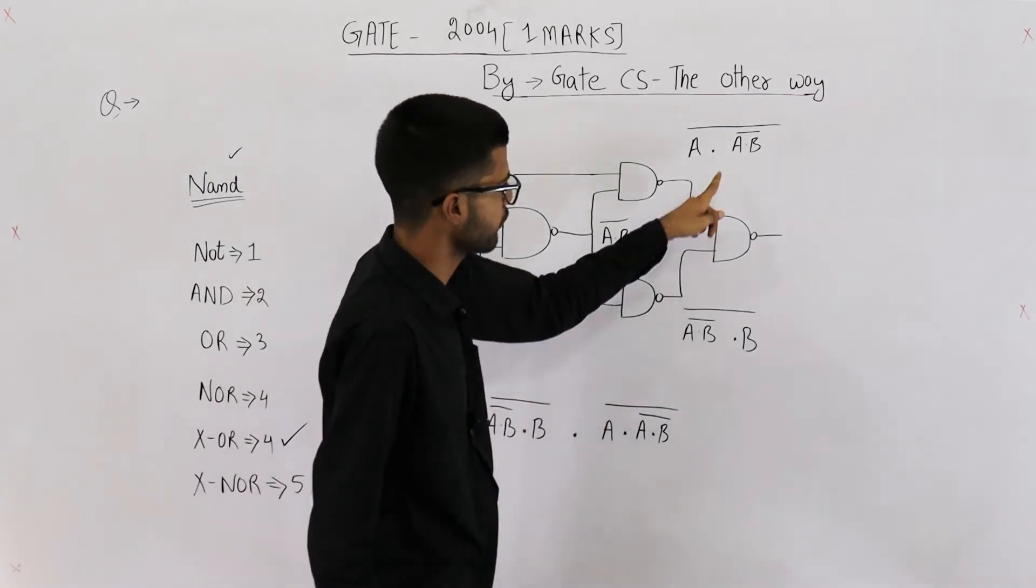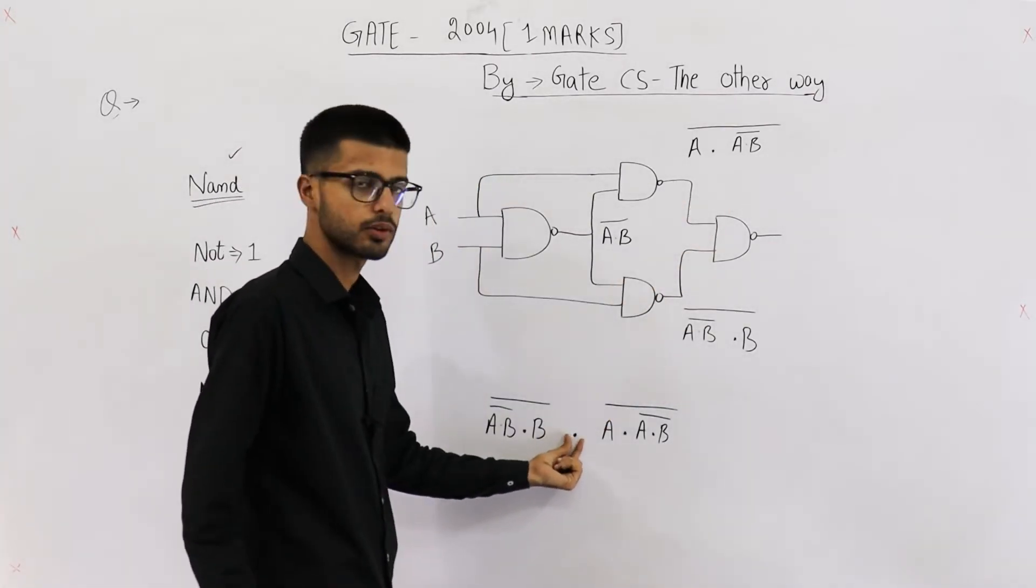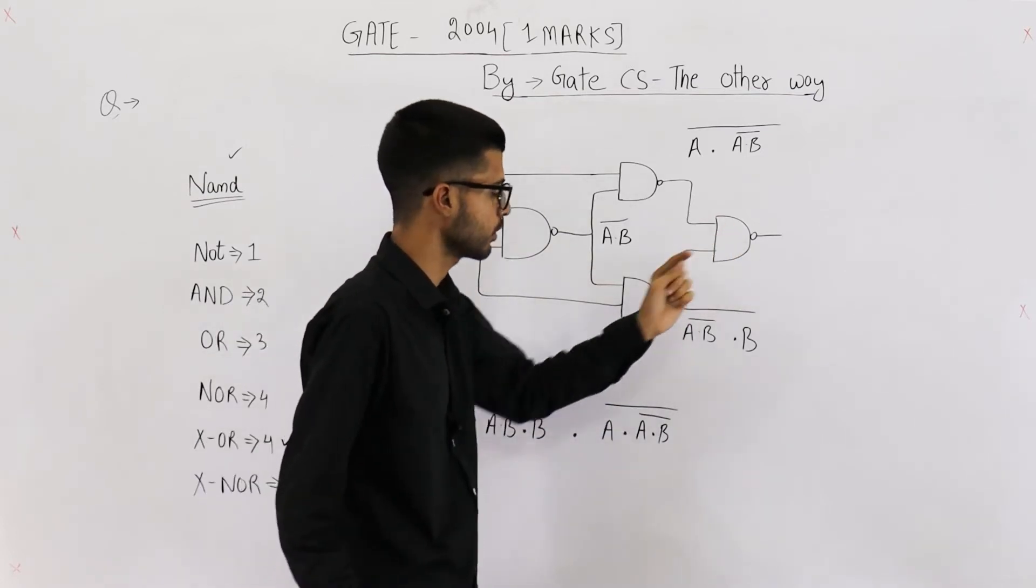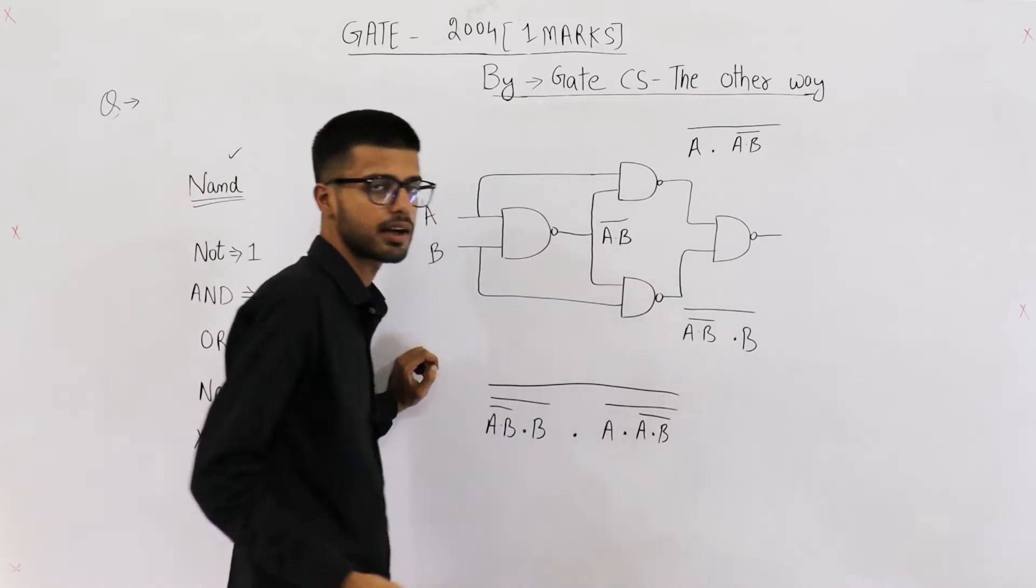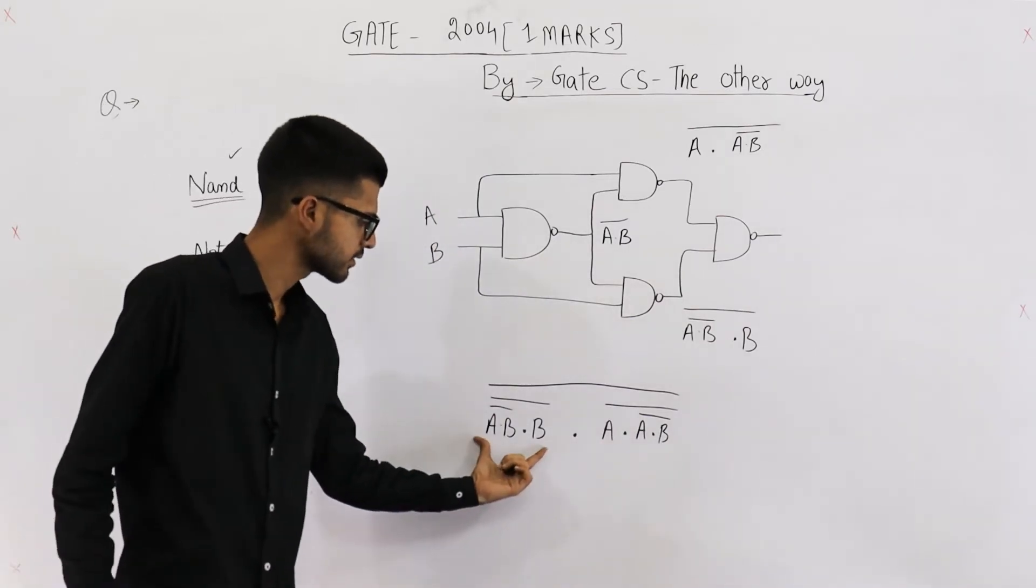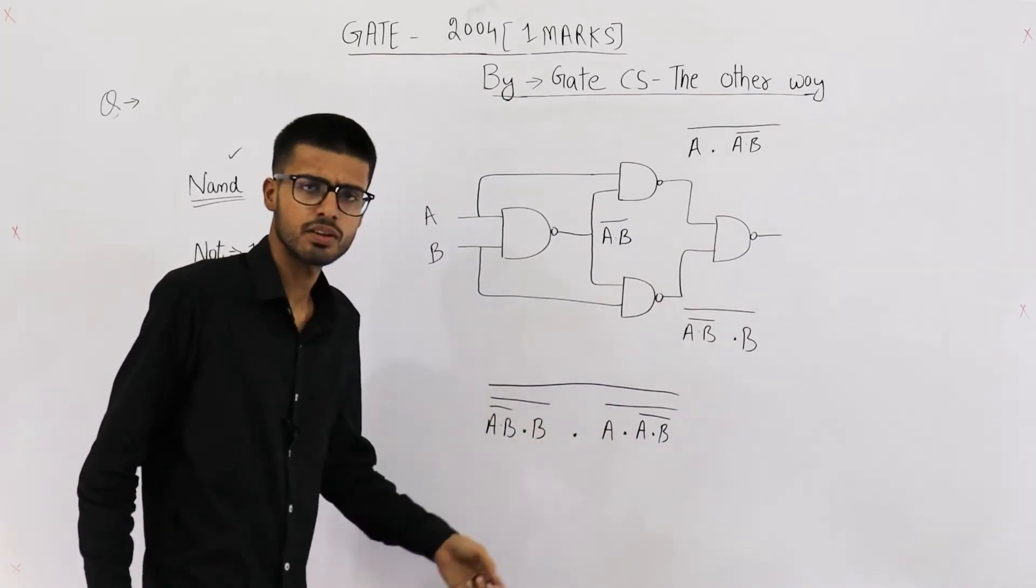Now we have performed AND of both of these, but we actually need NAND. This one is a NAND gate, so complement and you will get a NAND. Now writing this on this side and this on this side doesn't really matter because this NAND gate is commutative.